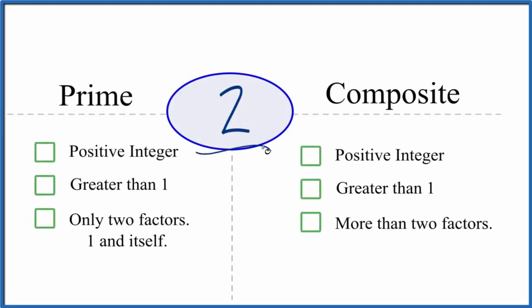Let's take a look and see whether 2 is a prime number or a composite number. It's an even number, so that makes it a little bit trickier here. But let's take a look at the checklists.